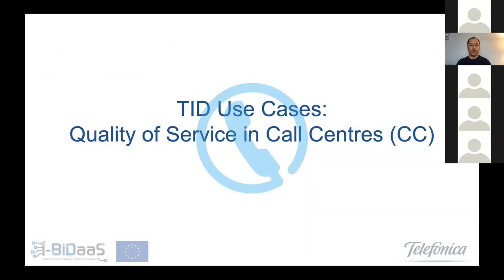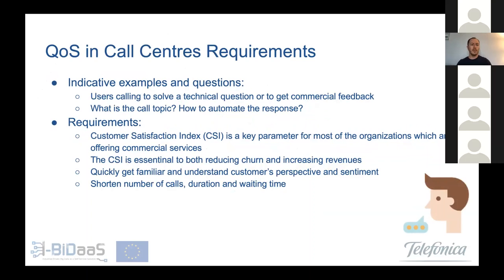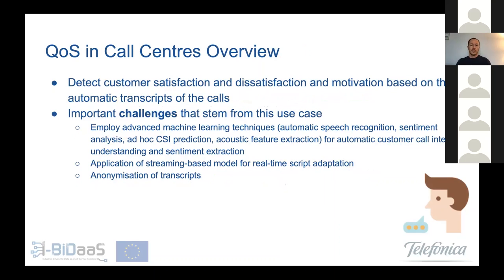After this brief overview, I will go through each use case separately. Starting with quality of service in call centers: some questions we usually ask are — users are calling to solve a technical question or get commercial feedback, what is the call about, how can we automate the response, how can we identify high-priority calls? There are several requirements. We have the customer satisfaction index, which is a key parameter for organizations offering commercial services, essential to reducing customer churn and increasing revenues. We need to quickly understand the customer's perspective and sentiment, and shorten call duration and waiting time. We want to detect customer satisfaction or dissatisfaction based on automatic transcripts of the calls.